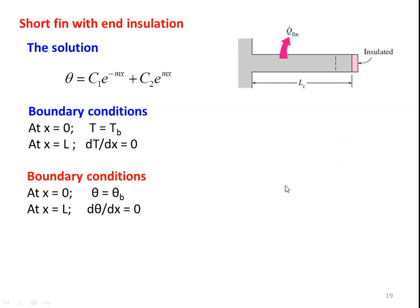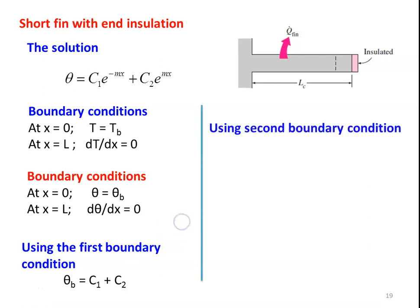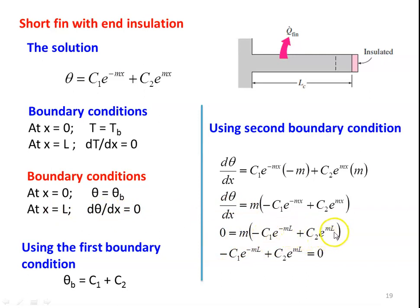The boundary conditions are modified in terms of theta: at x equal to 0, theta equal to theta b; at x equal to l, d theta by dx equal to 0. Using the first boundary condition, theta b equal to C1 plus C2. Using the second boundary condition, we find the derivative: d theta by dx equal to C1 e to the power of minus mx into minus m, plus C2 e to the power of mx into m, rearranged as m into minus C1 e to the power of minus mx plus C2 e to the power of mx. Substituting d theta by dx equal to 0 at x equal to l gives: minus C1 e to the power of minus ml plus C2 e to the power of ml equal to 0.